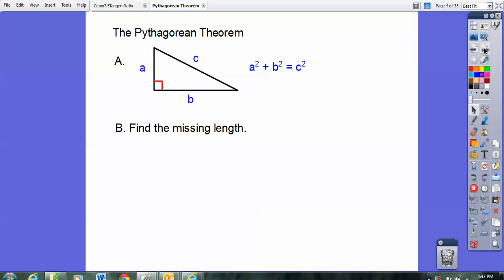So let's use some of these. Find the missing piece: 3, 4, and X. Some of you guys probably already know the answer, but this is how you use the Pythagorean Theorem: 3 squared plus 4 squared equals X squared.